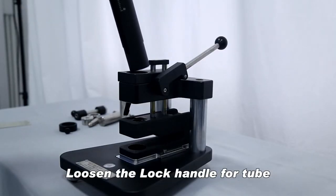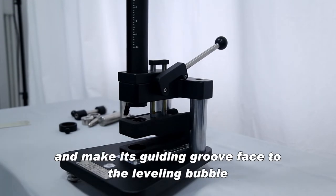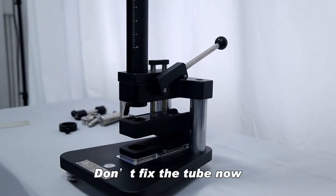Loosen the lock handle for tube, then put the tube into the guide tube holding block and make its guiding groove face the leveling bubble. Don't fix the tube now.